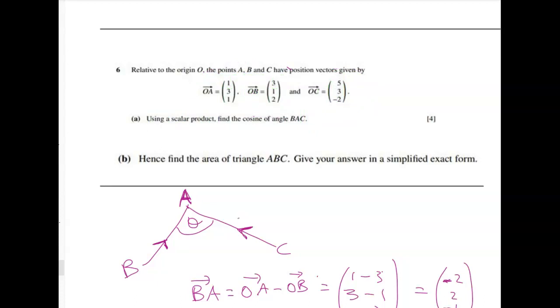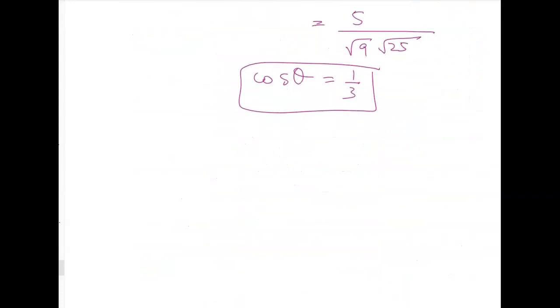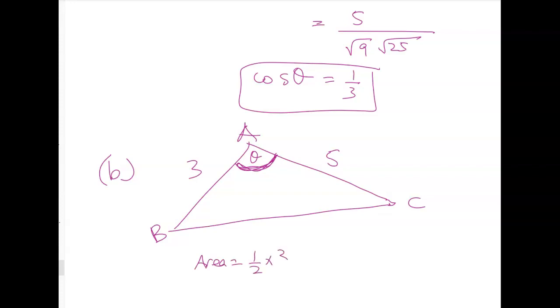Now, the reason why I say not to do that is if you look at the next part of the problem, we need to give our answer in a simplified exact form. So let's remember the first way, the year 12 or level 2 way, to find the area of a triangle. First of all, let's draw the triangle. So we've got A here, we've got B here, and we've got C here. But we know the length of AB is 3, and we know the length of AC is 5, and we've got some angle in here. So to find the area, it's going to be a half times 3 times 5 times sine theta.